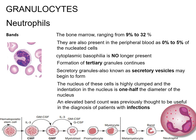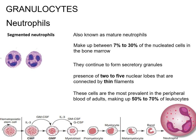Segmented neutrophils, also known as mature neutrophils, make up 7–30% of the nucleated cells in the bone marrow. They continue to form secretory granules during this stage of maturation. The main difference between segmented neutrophils and bands is the presence of 2 to 5 nuclear lobes connected by thin filaments. These cells are the most prevalent in the peripheral blood of adults, making up 50–70% of leukocytes.